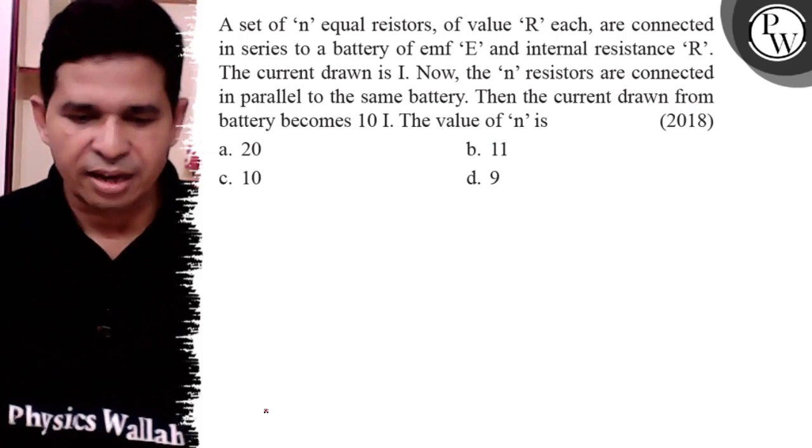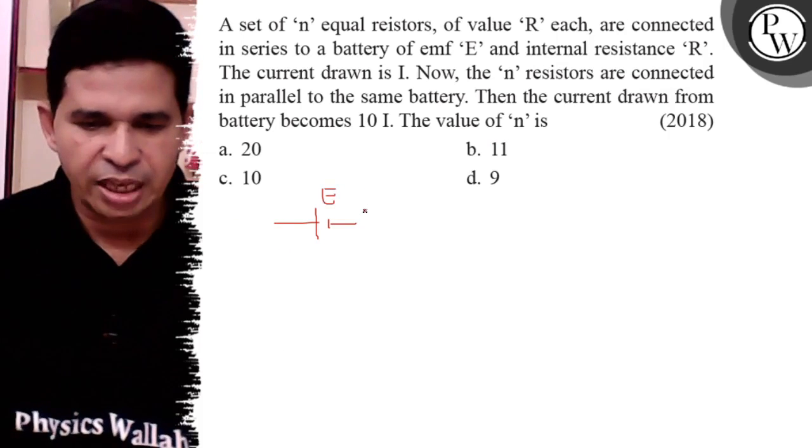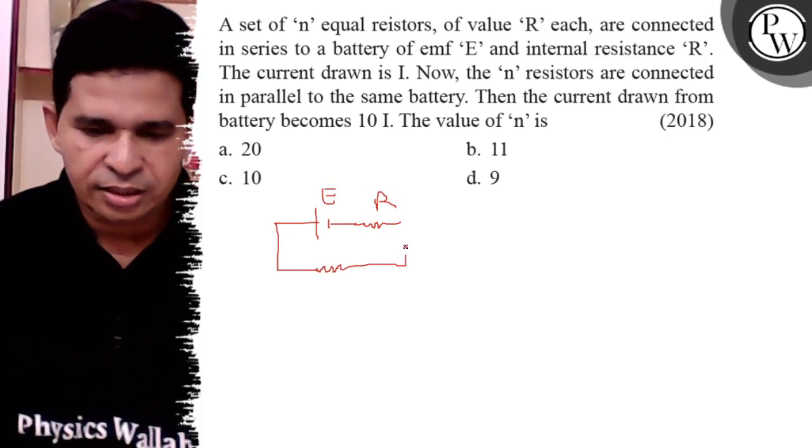Make the diagram. What is the question? It is the battery of EMF E and internal resistance R, and it is the series resistance, so it is NR.